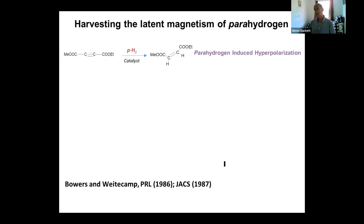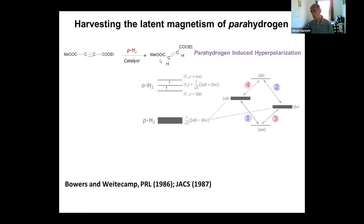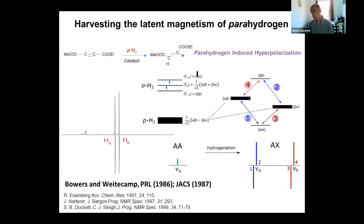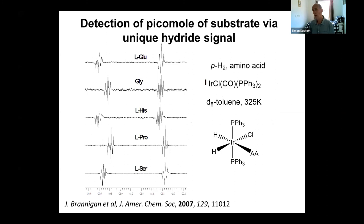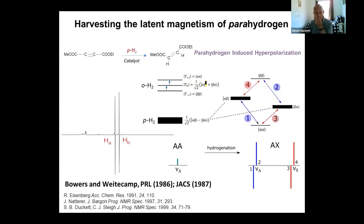If we think about harvesting this latent magnetism of parahydrogen, the early work by Dan Weitekamp set out to take a metal catalyst, parahydrogen, and introduce it into an organic substrate — a hydrogenation product created from parahydrogen. We were only going to populate energy levels, here alpha-beta and beta-alpha, in the product. The result is that we would see strong signals because the population difference across those energy levels is much larger than we would otherwise predict. I've been very fortunate in working with parahydrogen for a number of years — the first measurements I took using parahydrogen were made in 1990.